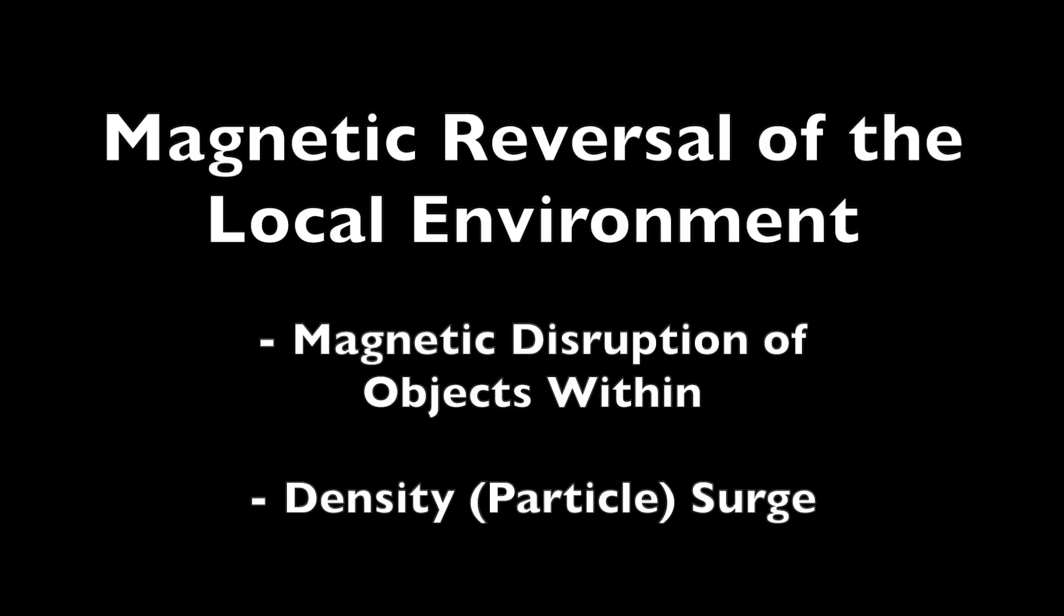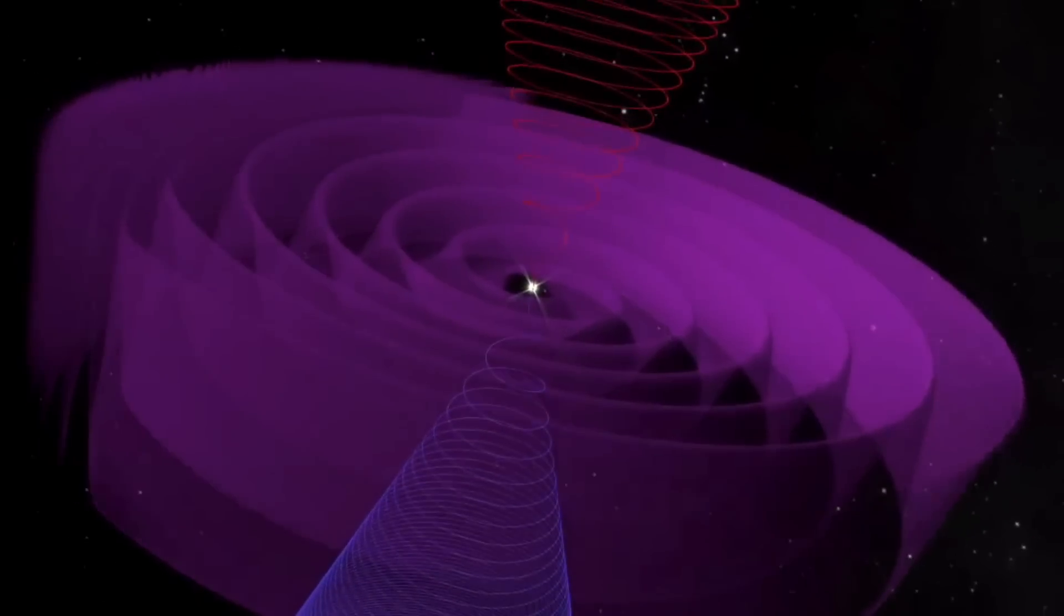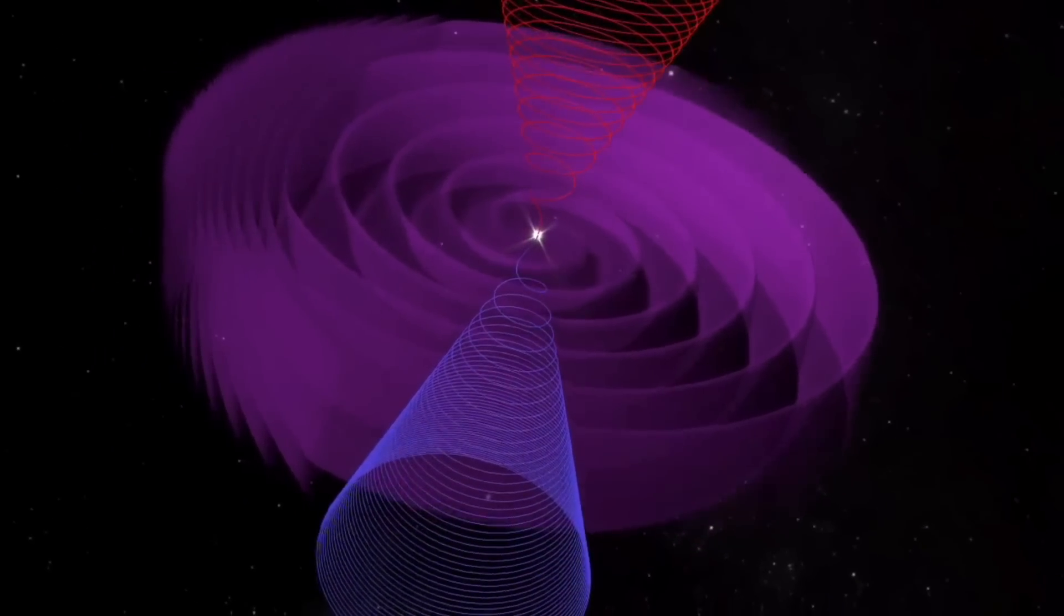This is precisely what we have seen throughout the solar system as we are currently being impacted by the galactic current sheet. Every planet is experiencing changes of a magnetic nature due to the ambient environment magnetic reversal and progress, and those extra particles have been seen from the sun's atmosphere all the way out to the region beyond Pluto.